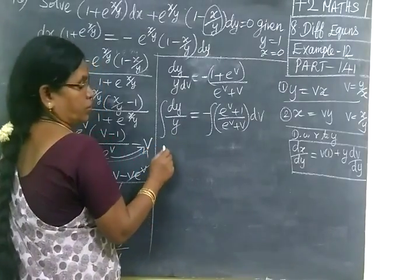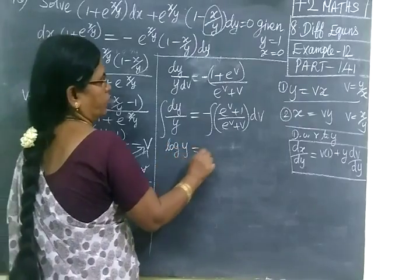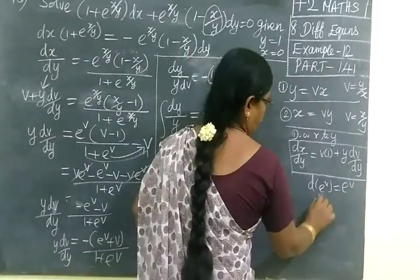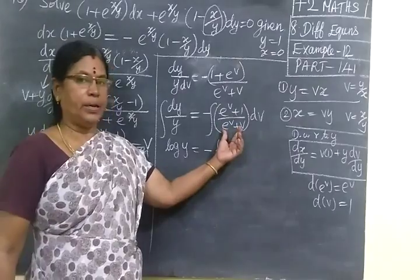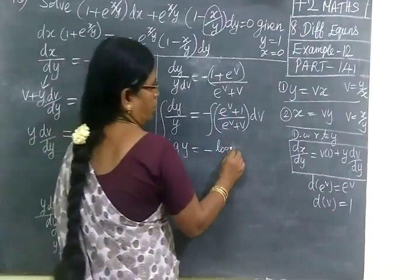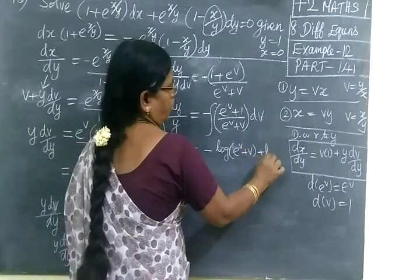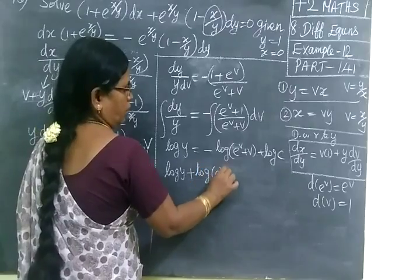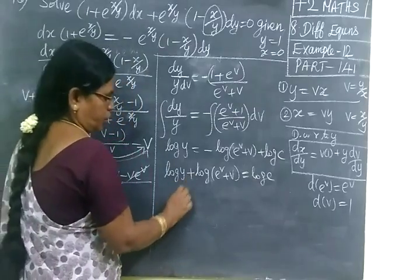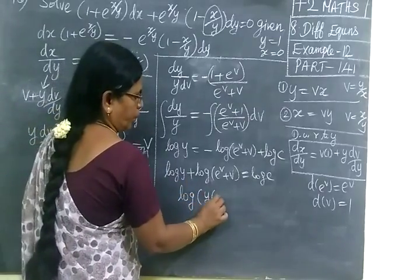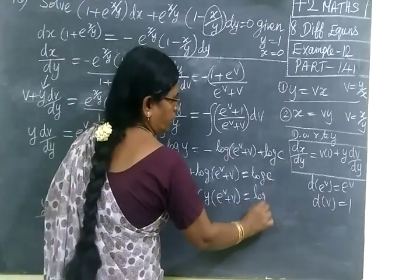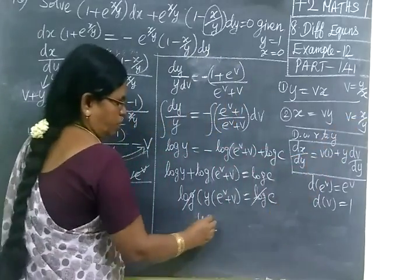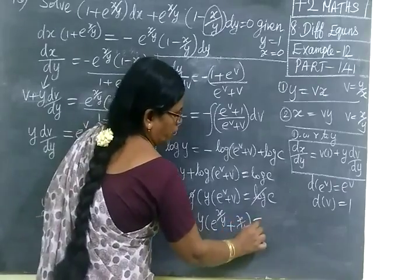Now integrating: we get log y equal to minus of log(e power v plus v) plus log c — because the differentiation of the denominator (e power v plus v) is (e power v plus 1), which is in the numerator. So log y plus log(e power v plus v) equal to log c. Therefore y into (e power v plus v) equal to c. For v you are writing x by y, so y times (e power x by y plus x by y) equal to c.